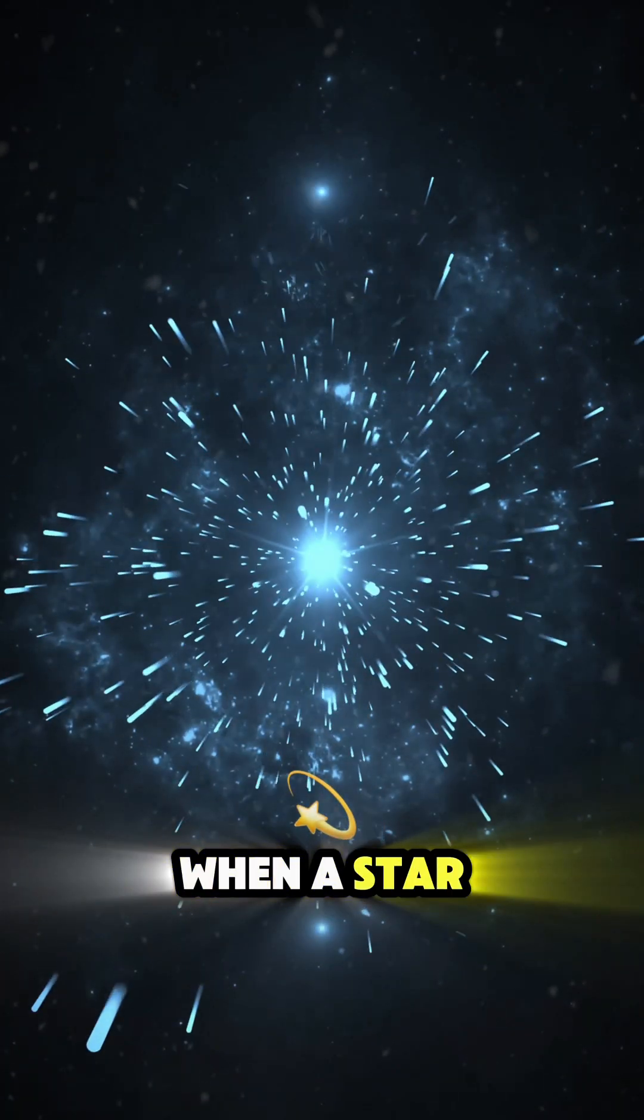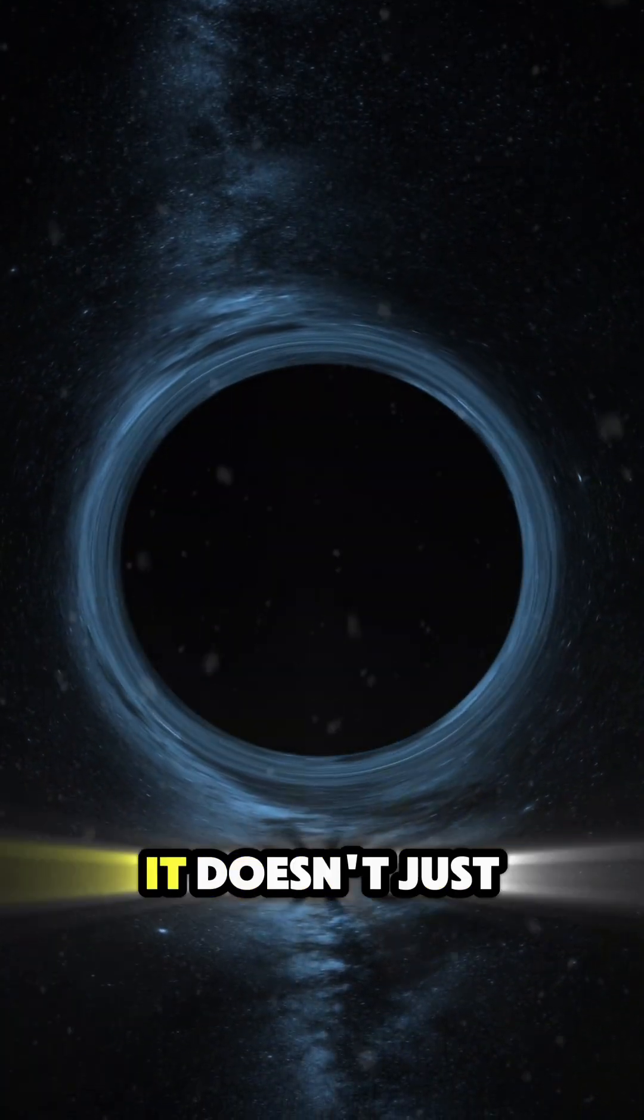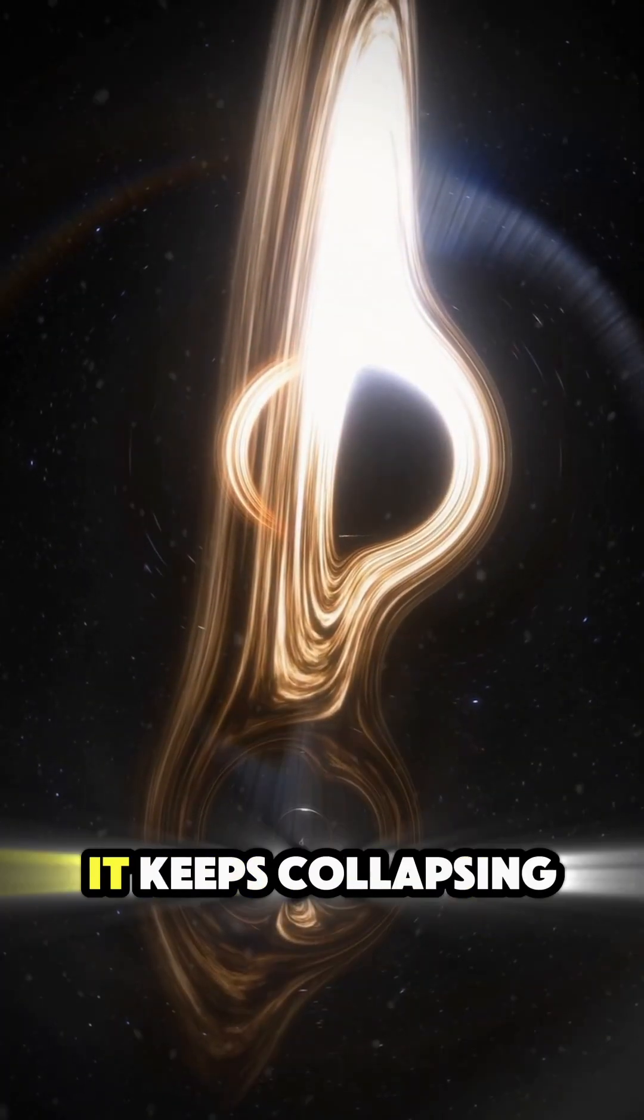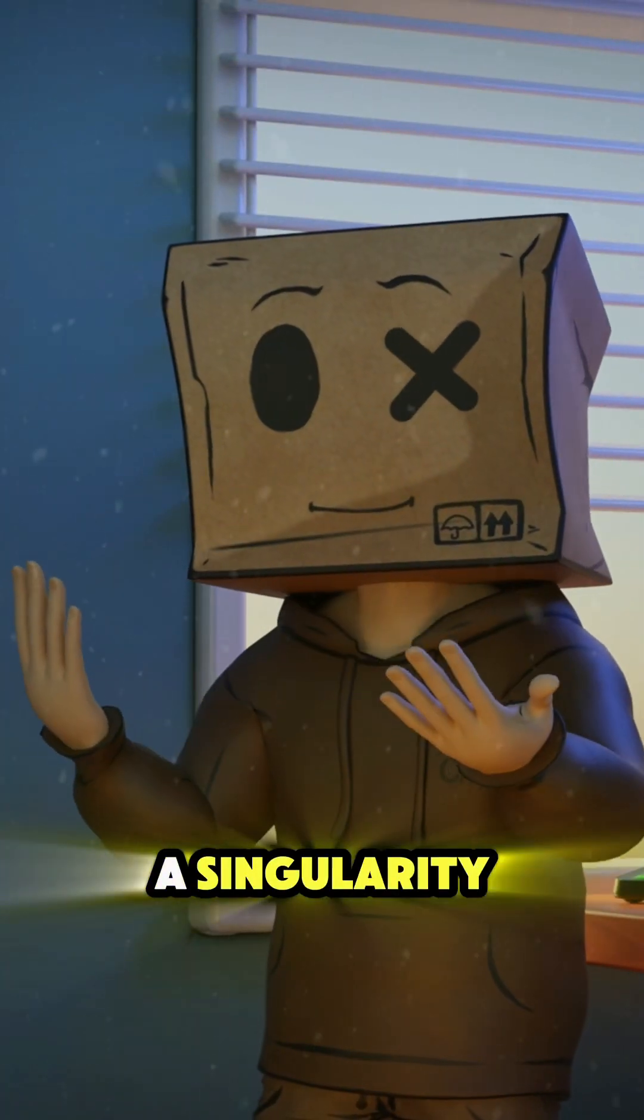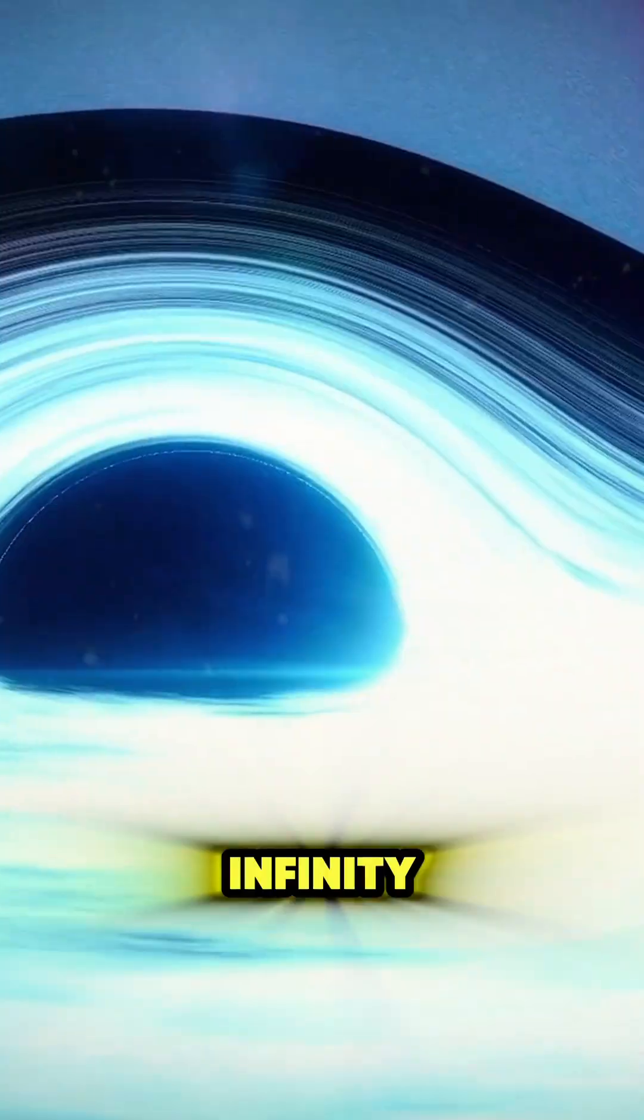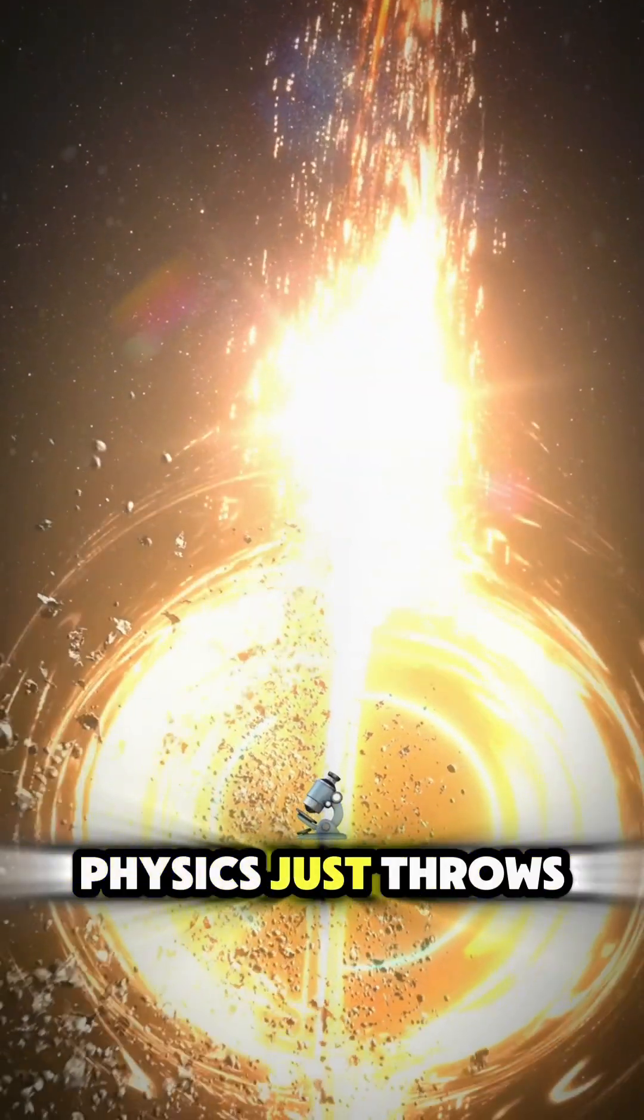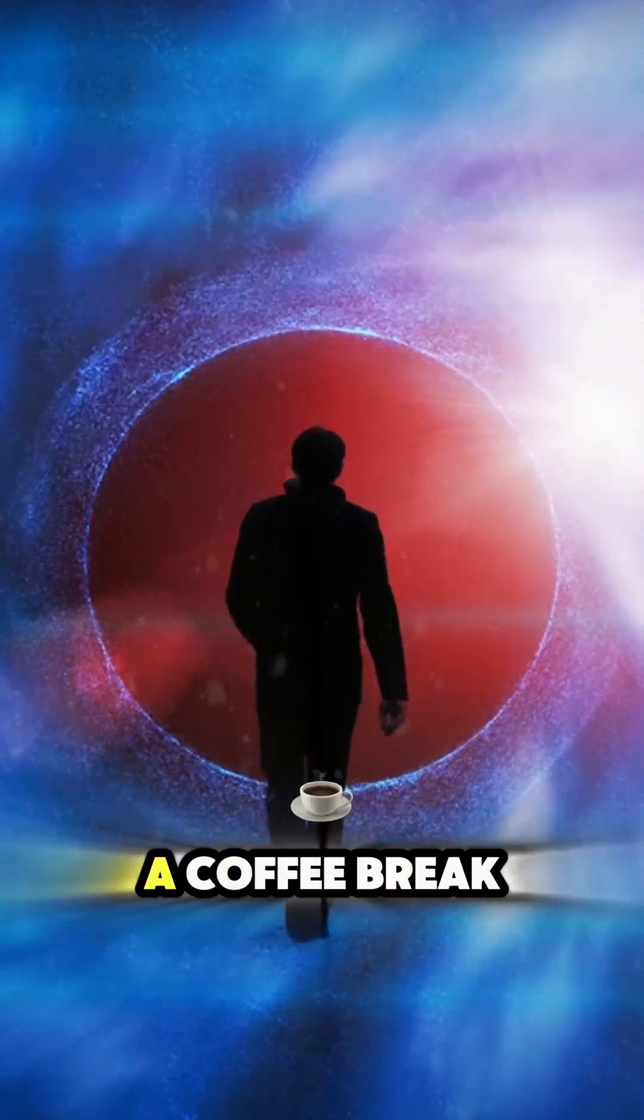So according to general relativity, when a star collapses to form a black hole, it doesn't just stop at being super dense, it keeps collapsing until it forms a singularity, a point where gravity goes to infinity and our understanding of physics just throws in the towel and goes for a coffee break.